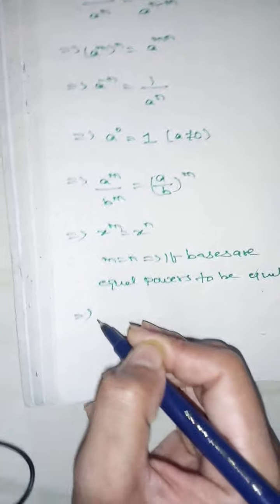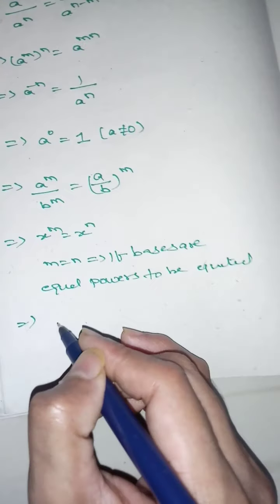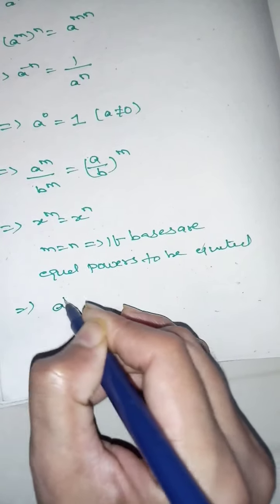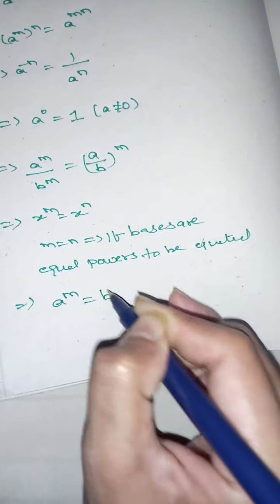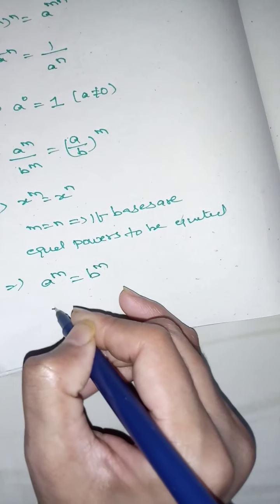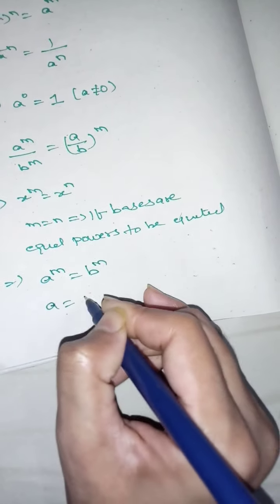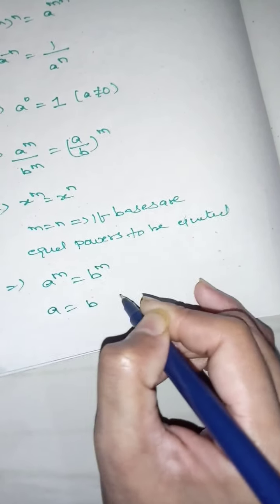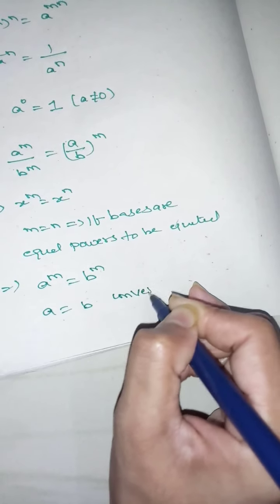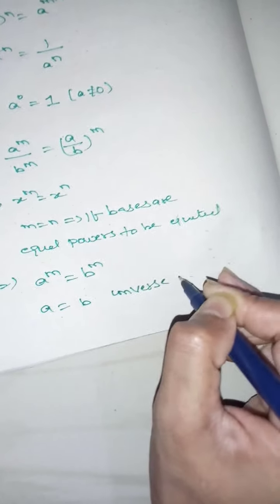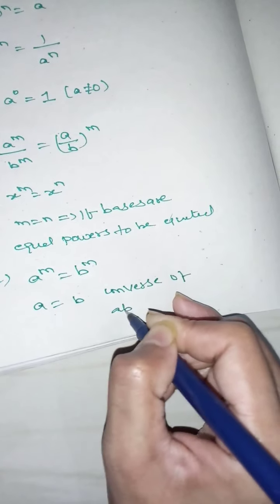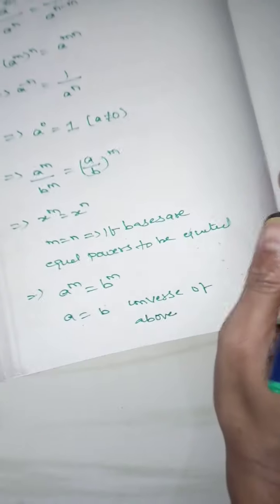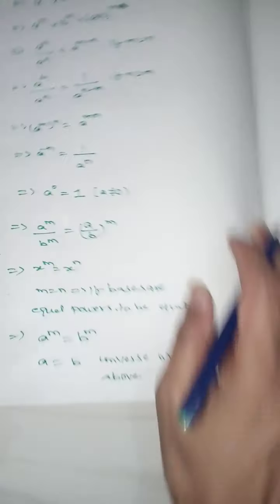The next principle is: when the powers are made equal, then a is equals to b. This is the converse of the above theorem, and that is important to be noted down.